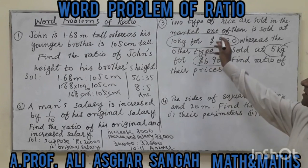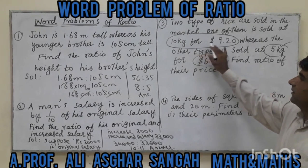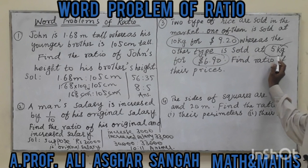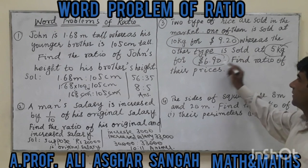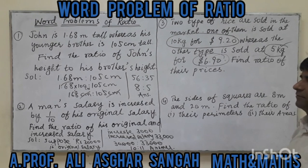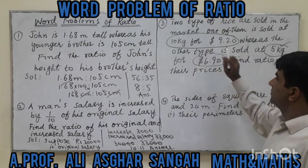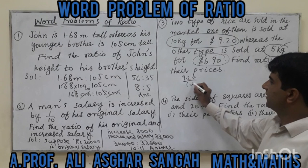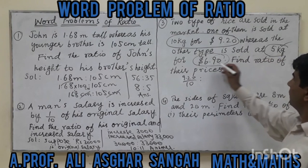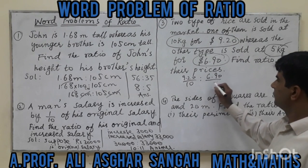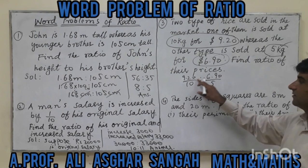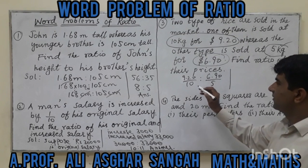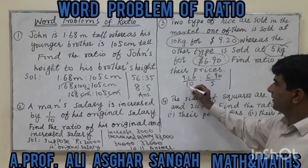Question number 3: If the price of 10 kilos is 9.20 dollars, and the price of 5 kilos is 6.90 dollars, find the price per kilo in each case. For 10 kilos: 9.20 divided by 10. For 5 kilos: 6.90 divided by 5.